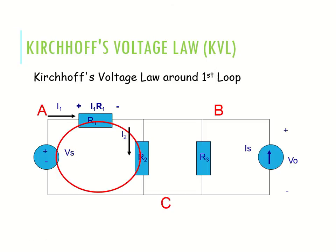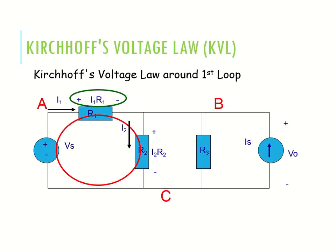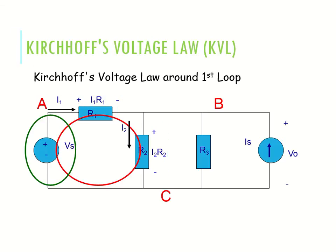Applying KVL to the first loop: I1 × R1 is the voltage drop across R1, and I2 × R2 is the voltage drop across R2. According to KVL, the applied voltage Vs equals the drop in the loop: Vs = I1·R1 + I2·R2, where Vs is the applied voltage and I1·R1 + I2·R2 are the induced or consumed voltages.